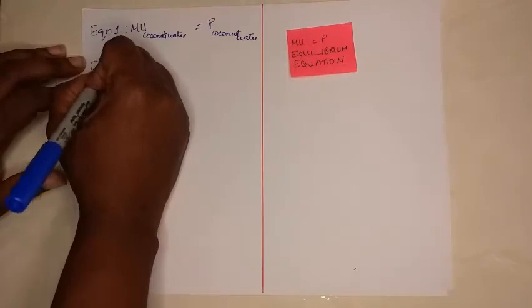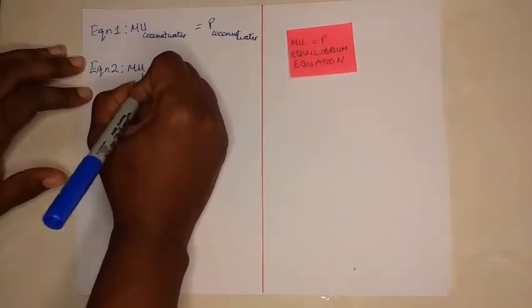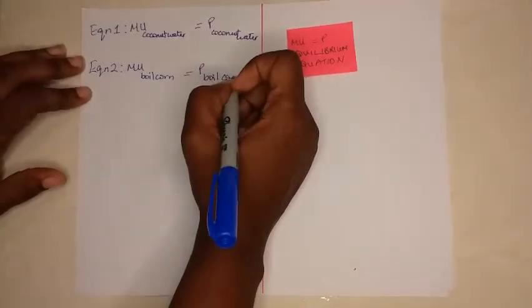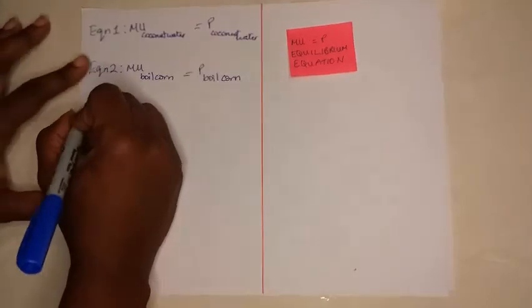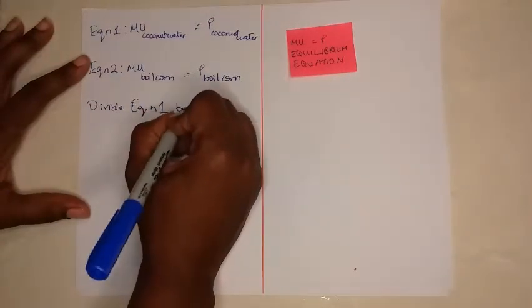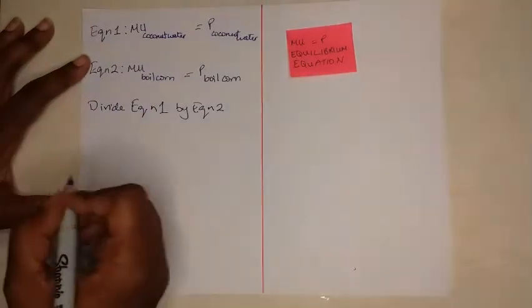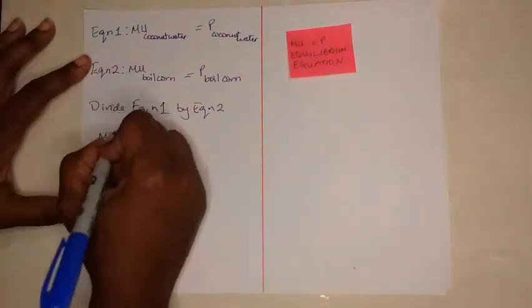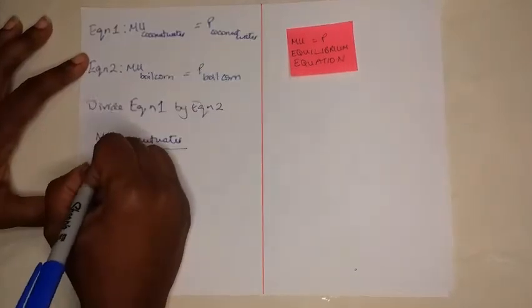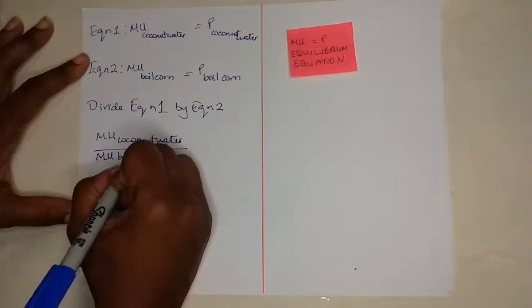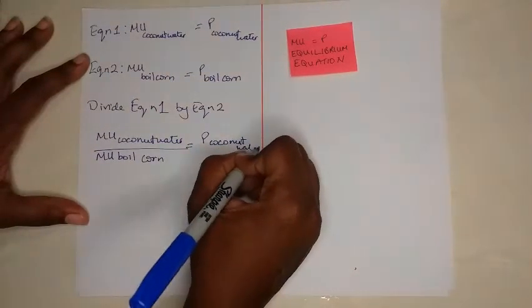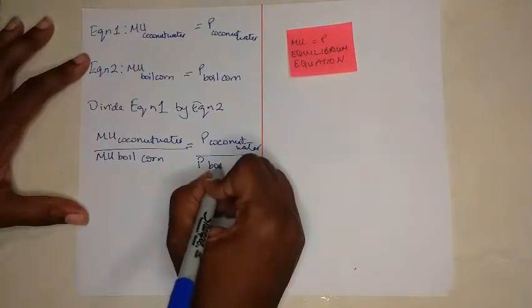Then you're going to have a second equation called equation 2, where the MU of boiled corn is going to be equal to the price of boiled corn. So this is equation 2. What you will then do is divide equation 1 by equation 2. And you'll end up getting the MU of coconut water divided by the MU of boiled corn being equal to the price of coconut water over the price of boiled corn.